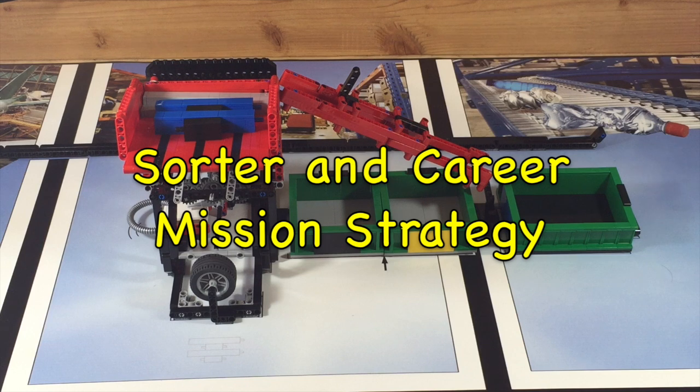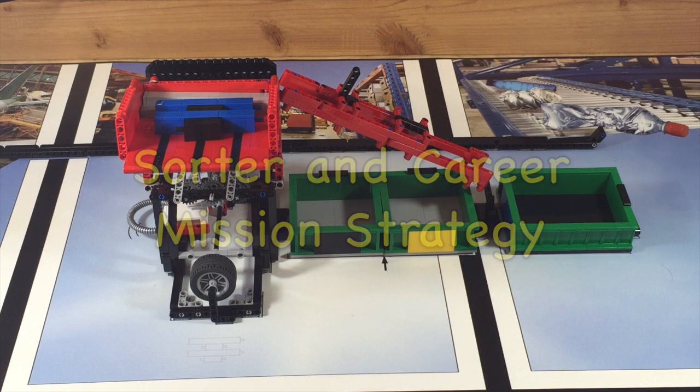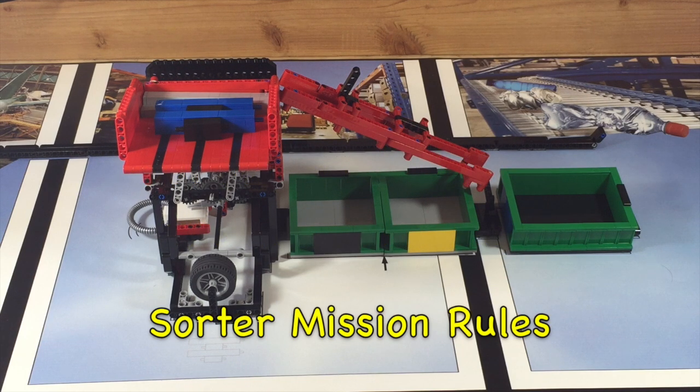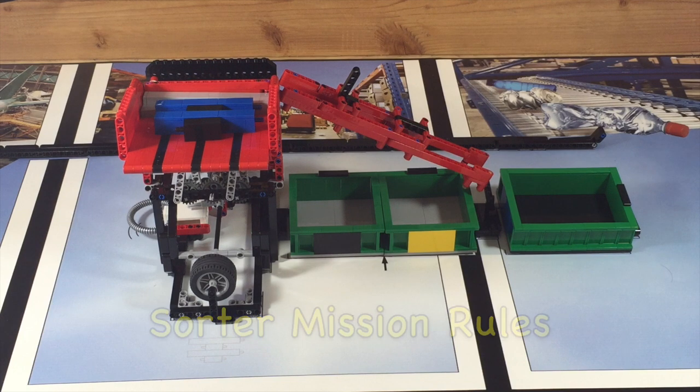Today we're going to talk about the Sorter and Create mission. For the Sorter mission, there are 15 blue and yellow bars, 6 points for sorting each bar, so you can get 90 points in all.